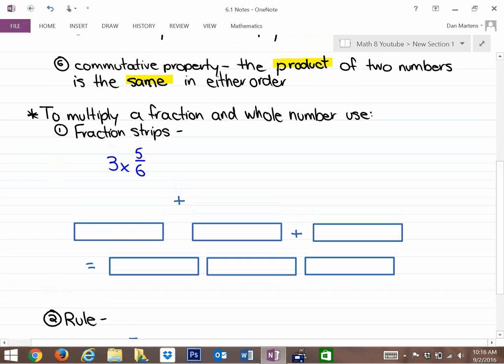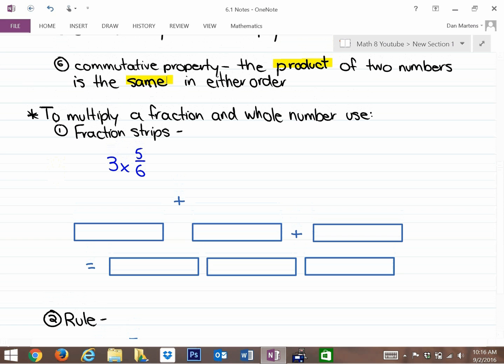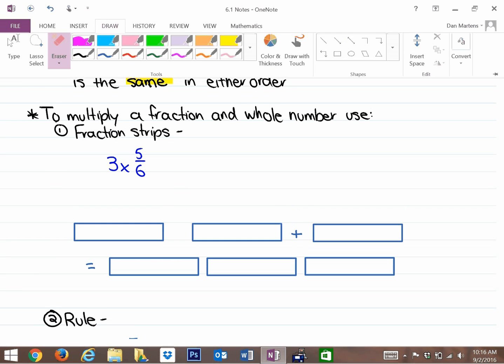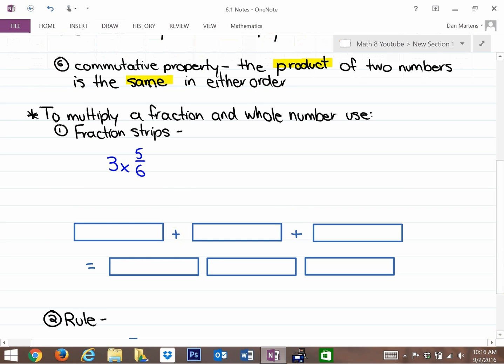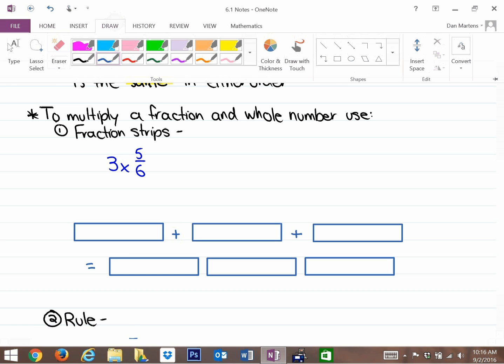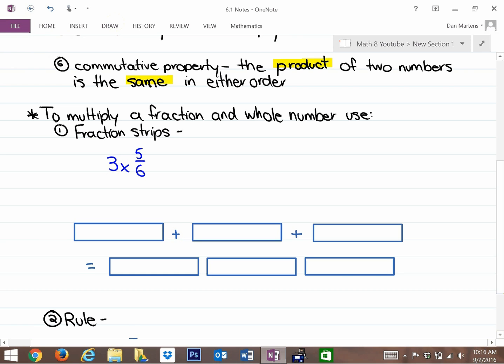The next part of this lesson is looking specifically at how we multiply a fraction and a whole number. One way to multiply a fraction and a whole number is to look at fraction strips. If we're doing 3 times 5 sixths, that is repeated addition. You have learned previously in mathematics that multiplication is the same as repeated addition. 3 times 5 sixths is the same as three groups of 5 sixths. It's the same as 5 sixths plus 5 sixths plus 5 sixths.